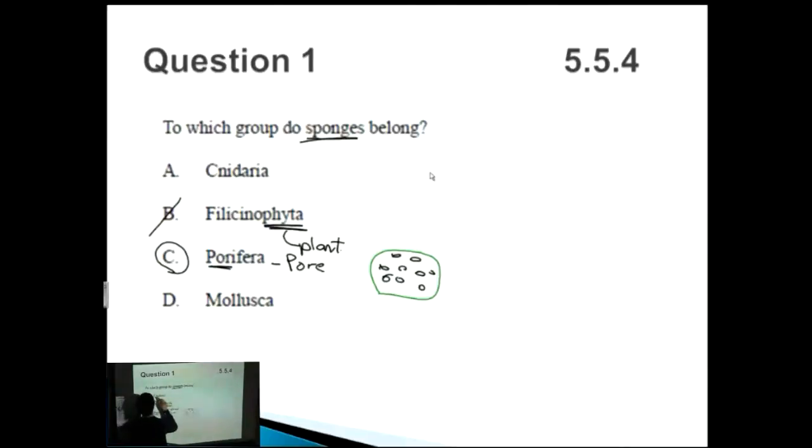So Cnidaria, what I think about is the C looks like this, and you can kind of turn it upside down and think of little tentacles coming off. That's what jellyfish are part of. The last one is Mollusca, which I actually know because I kind of like mollusks. Mollusks are things with one foot, so that includes snails and other things as well. Once again, just definitions you need to know.